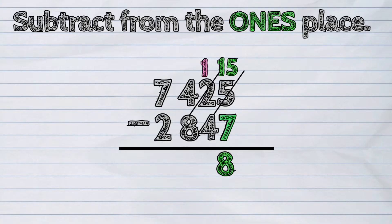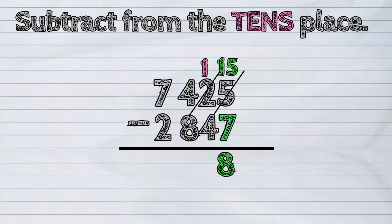Then we will subtract the digits in the tens place. One ten is less than four tens. So, let's borrow again. This time, from the hundreds place.